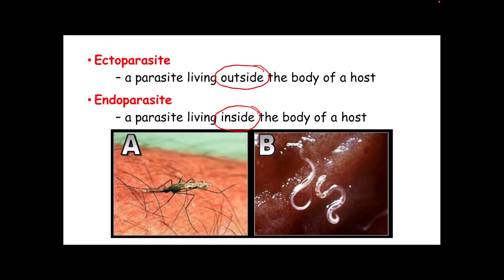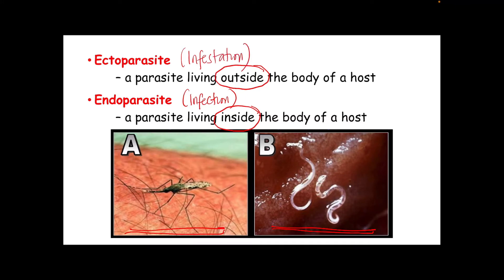We could also say that when we say infection, we are dealing with the presence of an endoparasite. Whereas when we say infestation, we are dealing with the presence of an ectoparasite. When we say erratic, that means a parasite found in an organ which is not its usual habitat. For example, the habitat of Ascaris lumbricoides is inside our small intestine. However, in some chronic cases, Ascaris could be found in the lungs or liver. That means Ascaris is an erratic parasite.